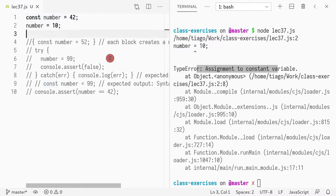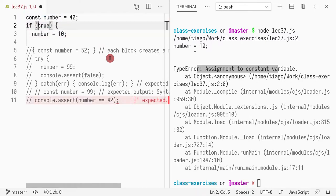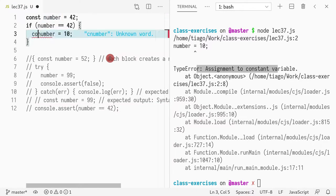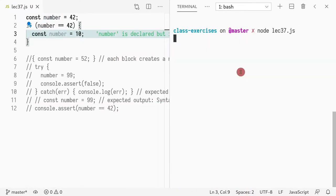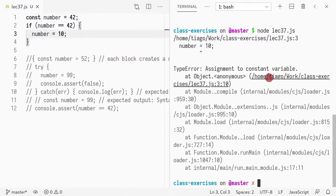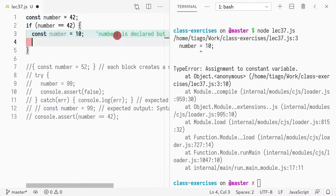I can, however, re-declare it in a new scope. So if I do if true or if number equals 42, then const number equals 10, that would work. I can't mutate it. That still won't work, even if it's in a different scope.